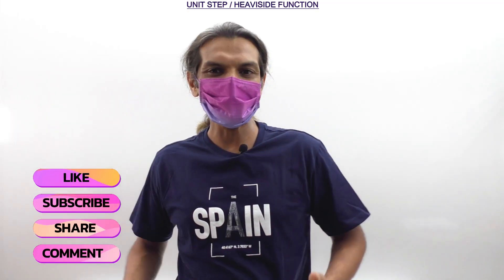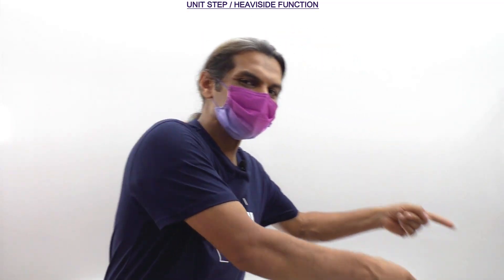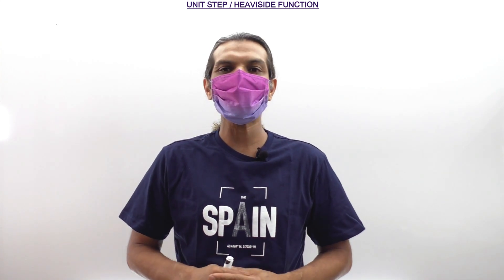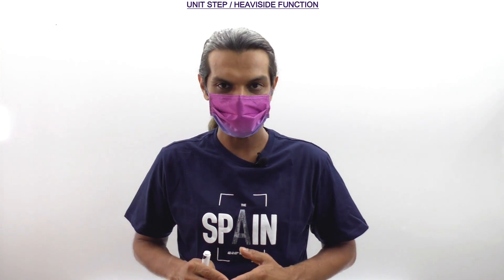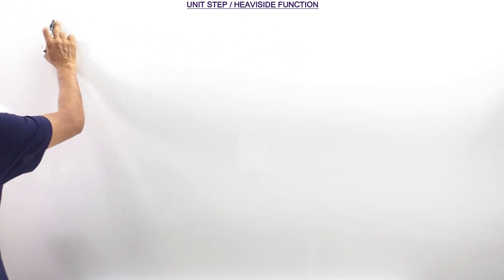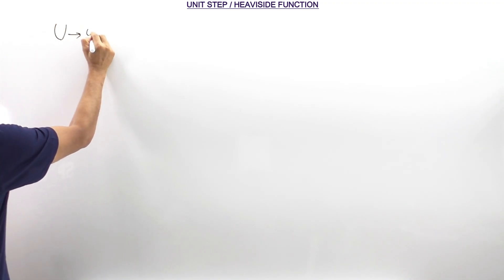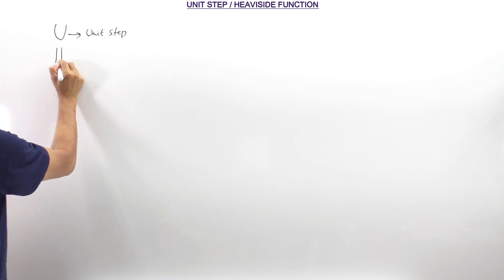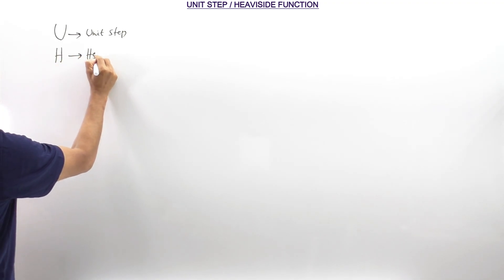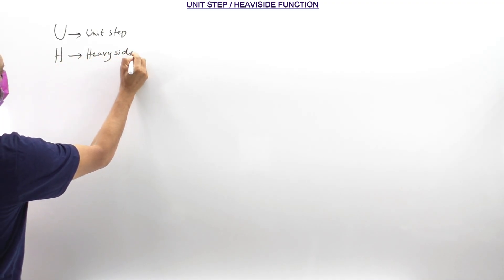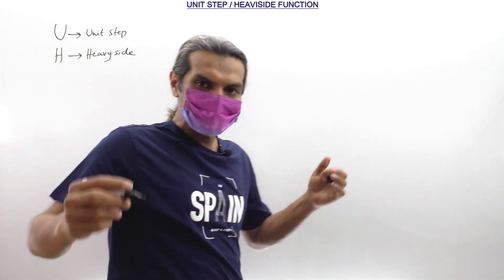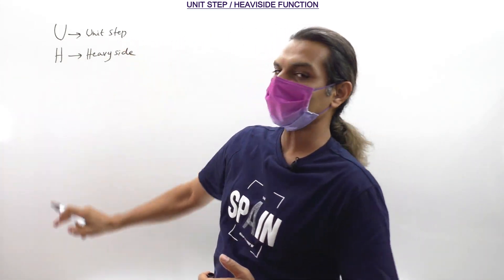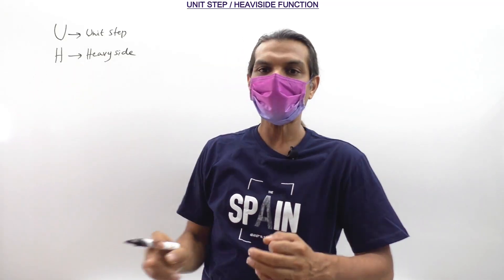Enough said, now let's get level-headed with the unit step function. So let's understand what actually the unit step or the Heaviside function is. Capital U means unit step and capital H means Heaviside. That means in the problem, if they ask unit step, you write U, and if they mention Heaviside, you write H.